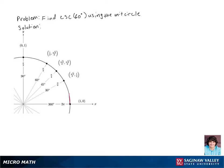Let's find cosecant of 60 degrees. First we're going to rotate 60 degrees on our unit circle. Now cosecant is just 1 over sine, so cosecant of 60 degrees is just 1 over the square root of 3 over 2.